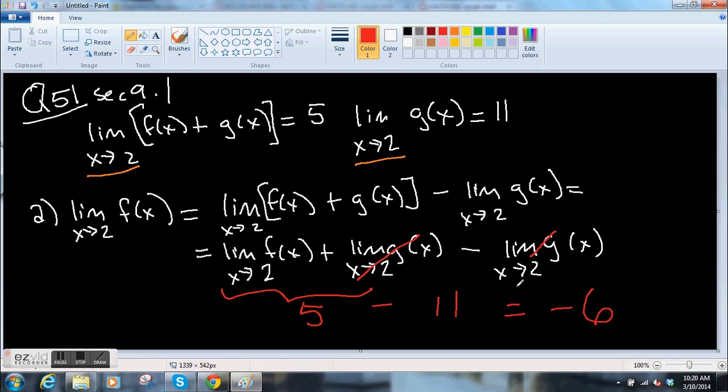That is equal to 5 minus 11 equals negative 6. See? Those are going to cancel, so it's like f of x equals negative 6. Ta-da! So the answer is the limit of f of x as x goes to 2 equals negative 6.